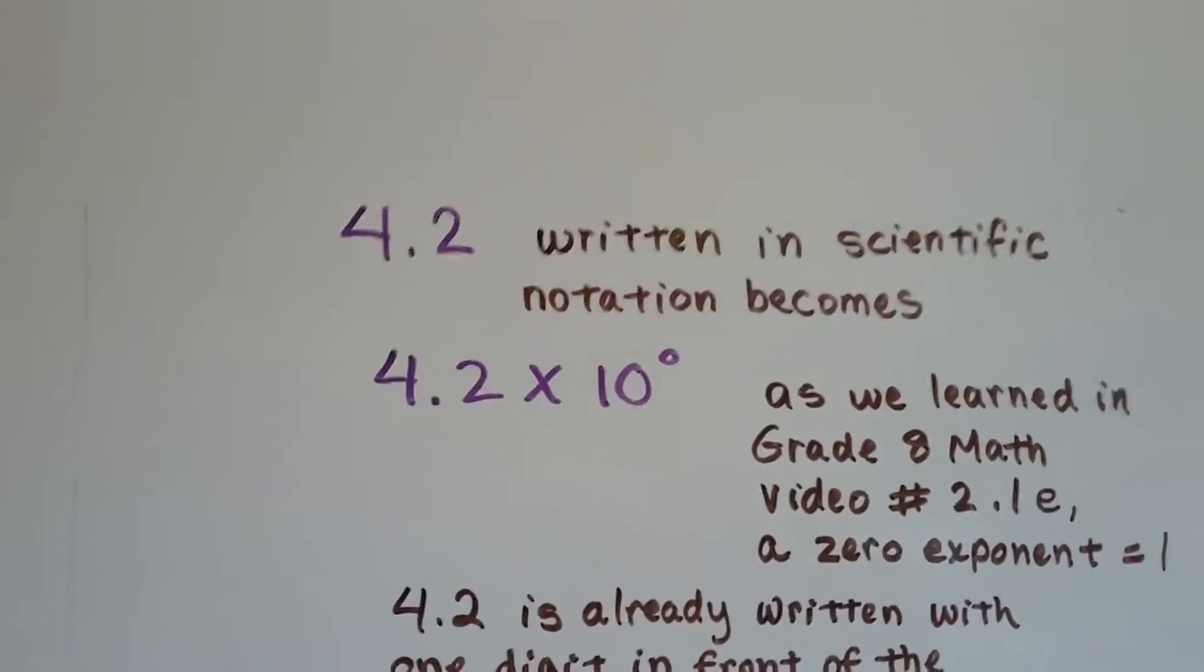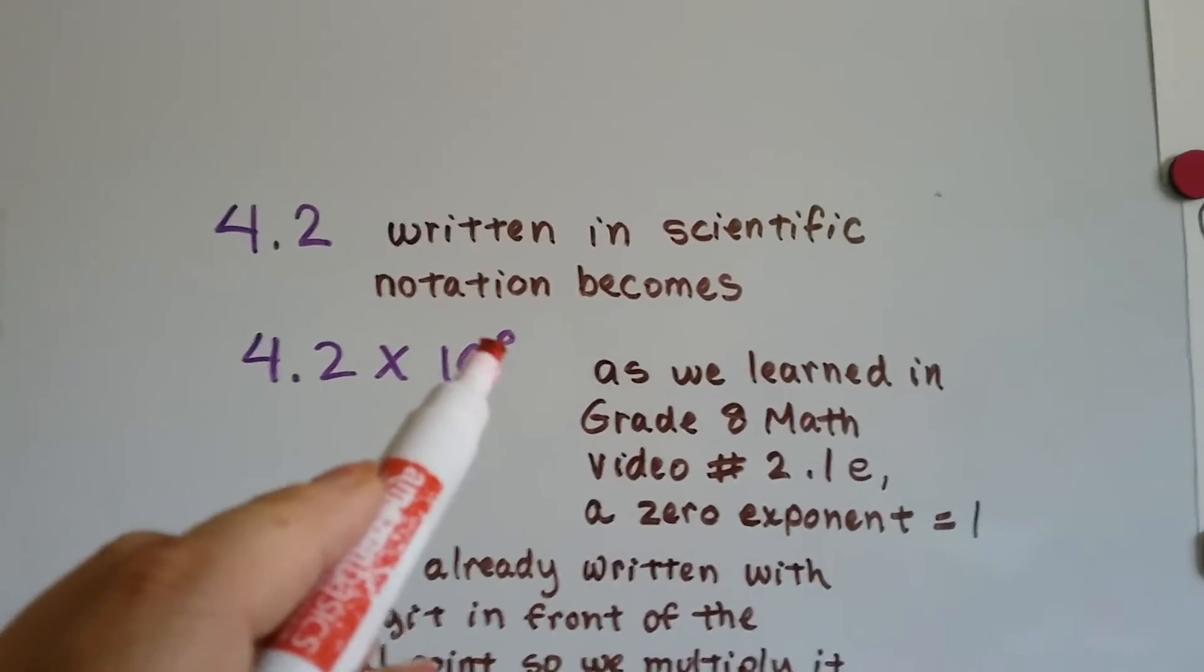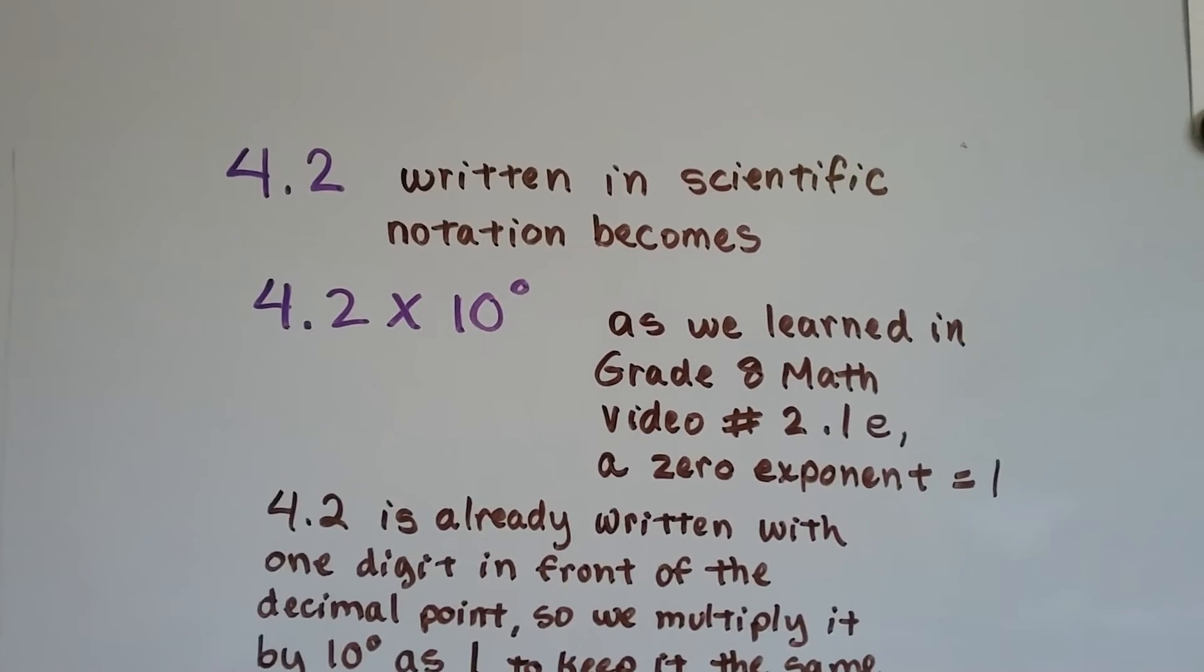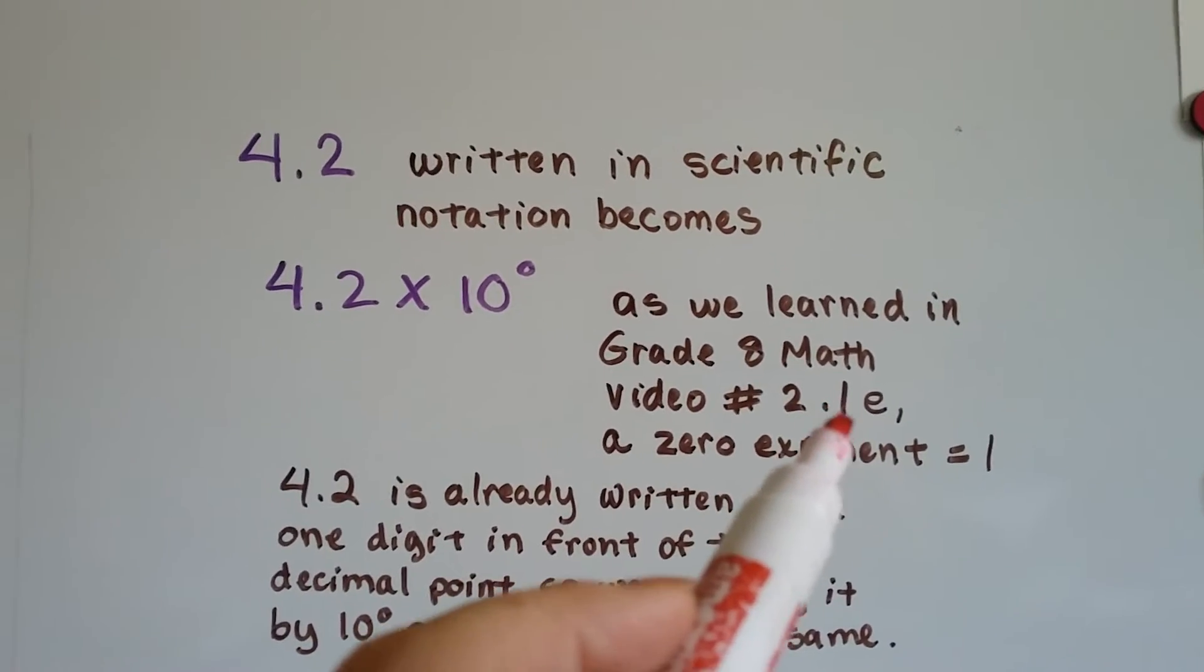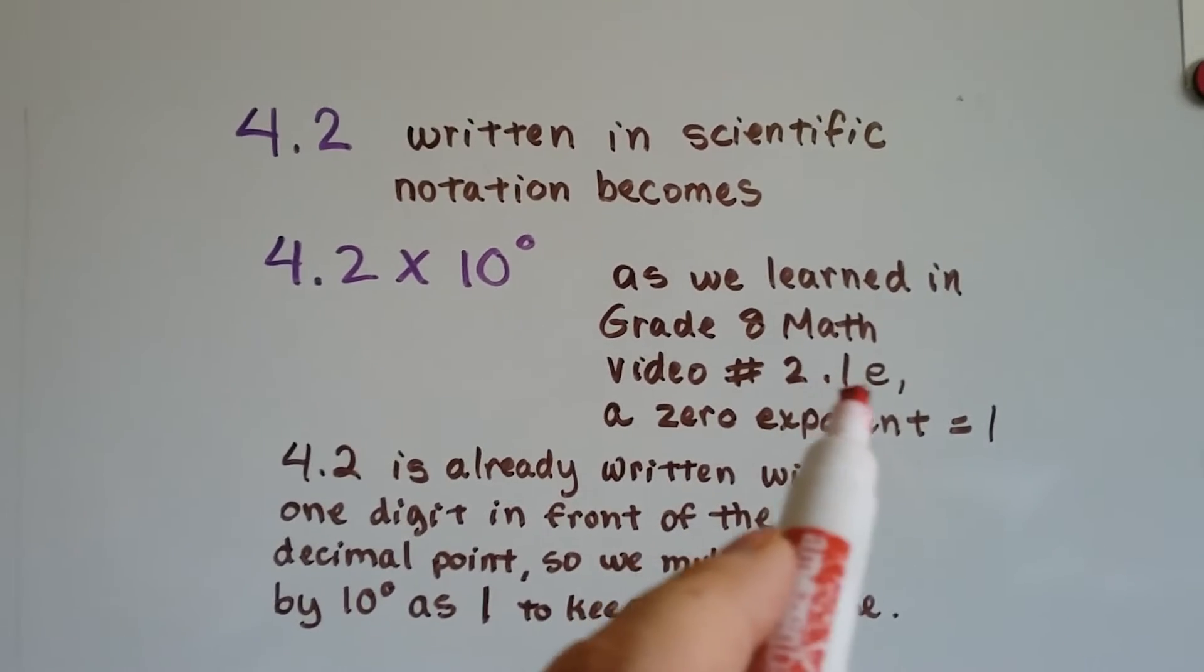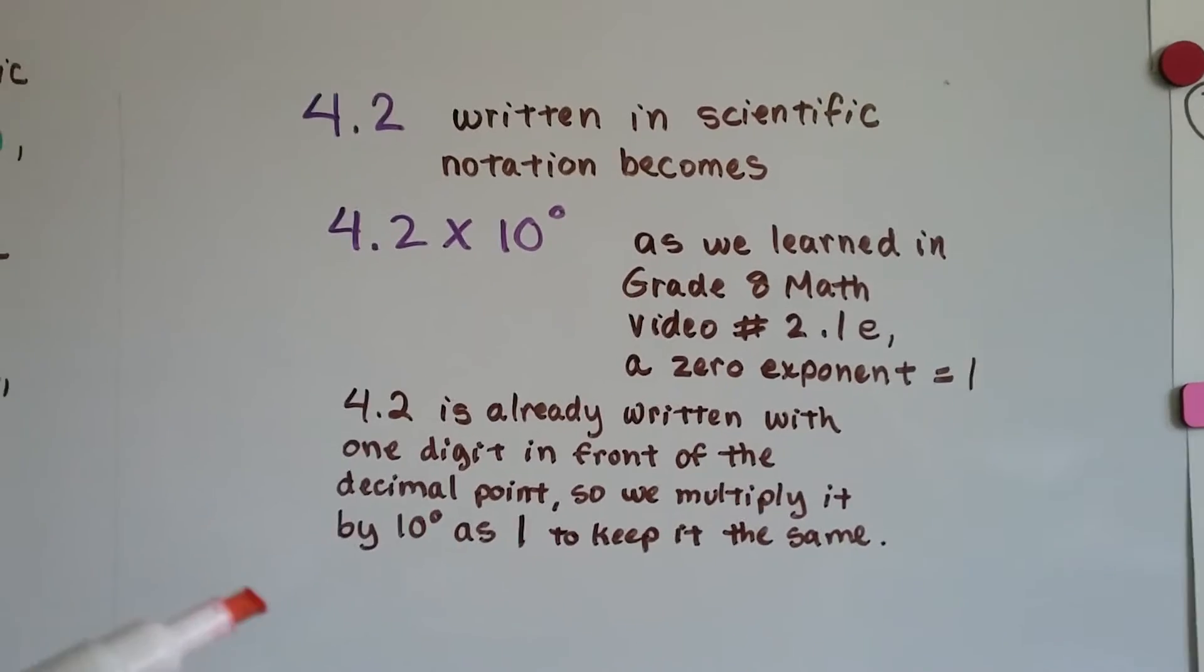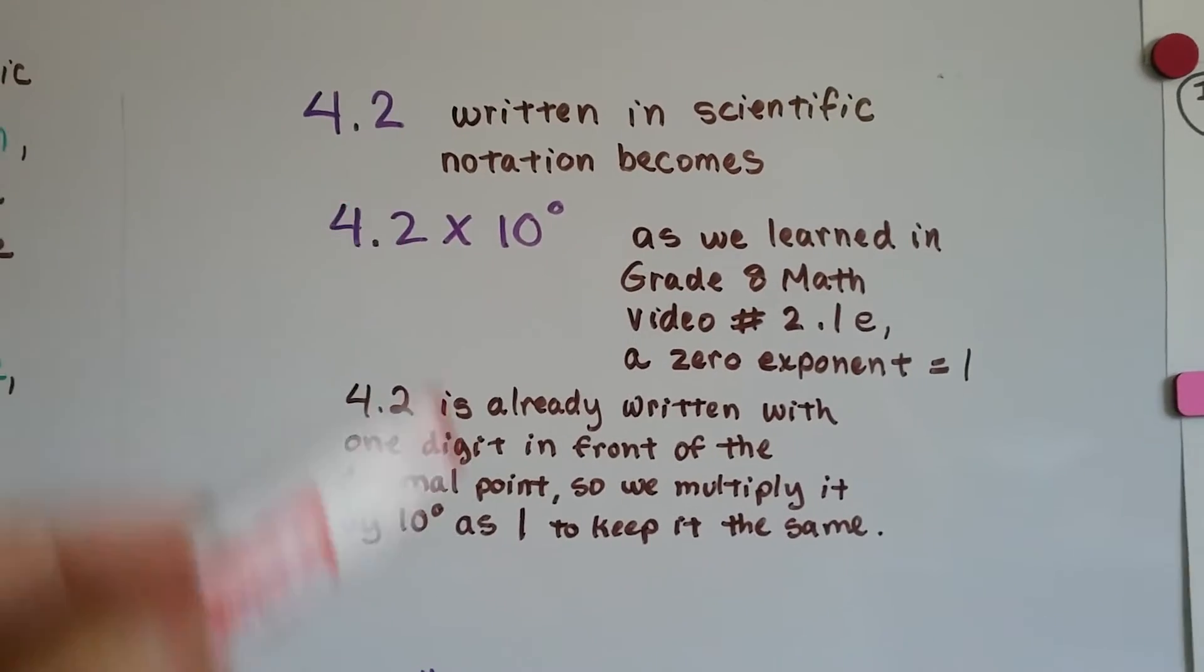4.2 written in scientific notation becomes 4.2 times 10 to the zero power. As we learned in grade 8 math video number 2.1e, a zero exponent equals 1. If you don't know about that, I would advise you to go back and check out this short little video. It's in this playlist as number 2.1e. 4.2 is already written with one digit in front of the decimal point, so we multiply it by 10 to the zero as a 1 to keep it the same.